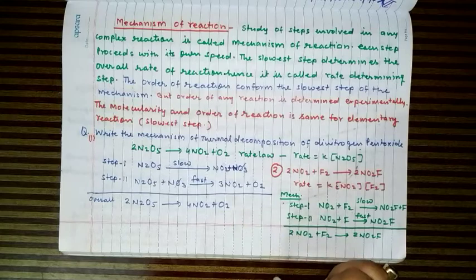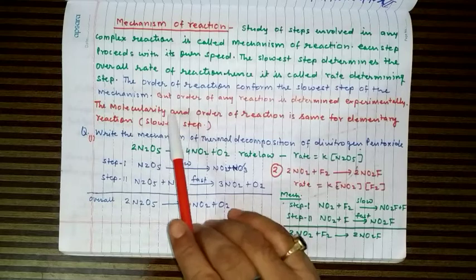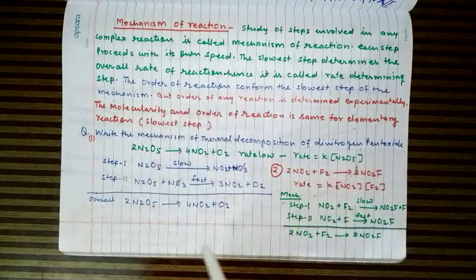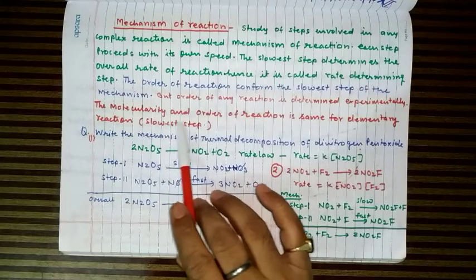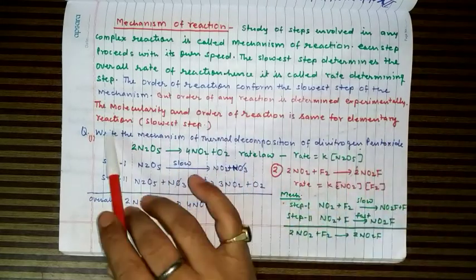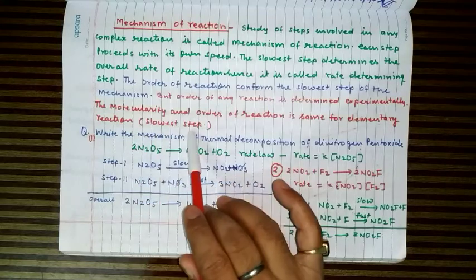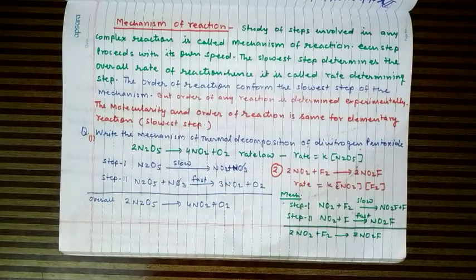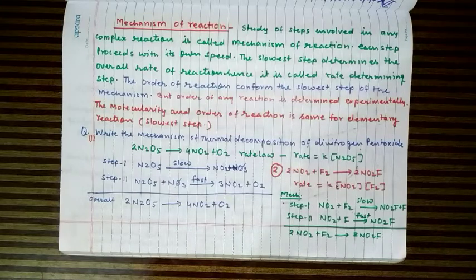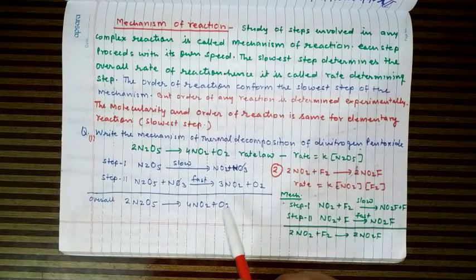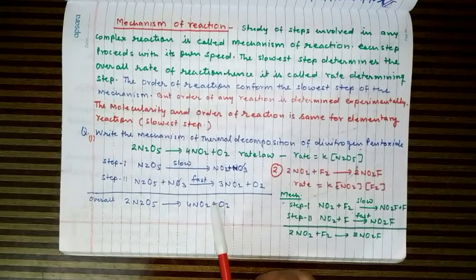The slowest step will be the rate-determining step and must conform to the rate law expression based on experimental observation. Note that the order of reaction is always determined experimentally. For elementary reactions, molecularity and order of reaction are the same. For the slowest step, since the order is based on experimental observation, molecularity and order will both be the same.